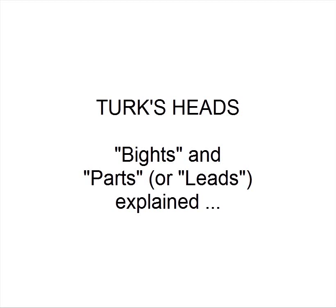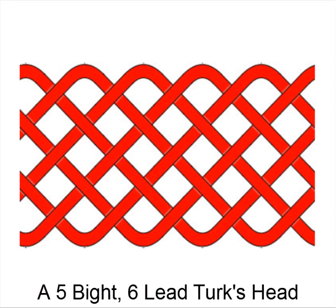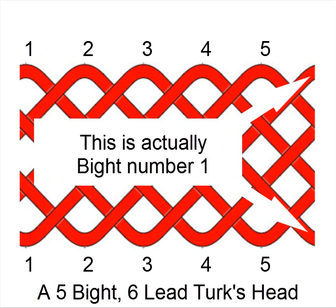Bites are fairly easy to understand. They're the number of turning points at each side of the Turks' head. Here's an example. This is a 5-bite, 6-lead Turks' head, or 5-bite, 6-part Turks' head, and I'll number the bites. If this was tied round a cylinder, you could see how the unnumbered half-bite, if you like, on the right-hand side is actually part of bite number 1.